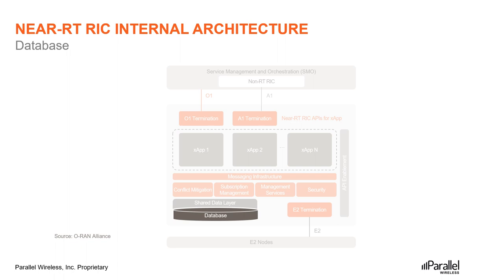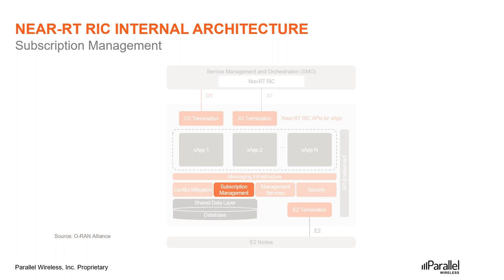A database is used for storing RAN and UE-related information. There is a UE network information base or UE-NIB where X-Apps can store UE-related information. Similarly, the radio network information base is where X-Apps may store radio access network related information. X-App subscription management manages subscriptions from the X-Apps to the E2 nodes. E2 nodes include the CU and DU in case of 5G, and the BBU in case of LTE. X-App subscription management also enforces authorization of policies controlling X-App access to messages, and enables merging of identical subscriptions from different X-Apps into a single subscription to the E2 node.